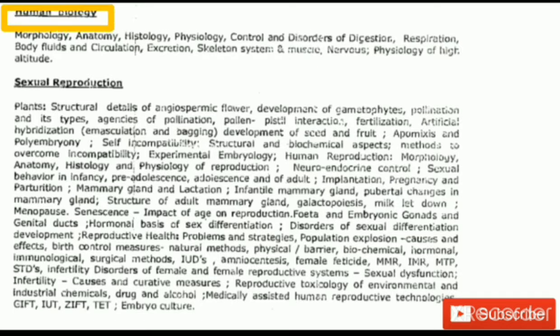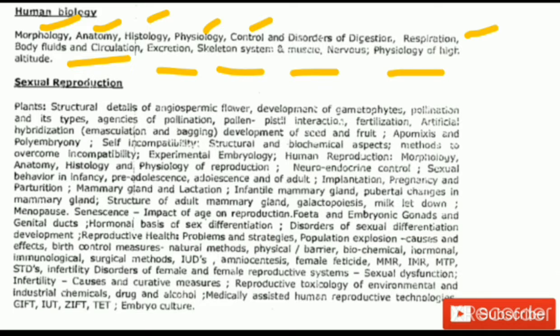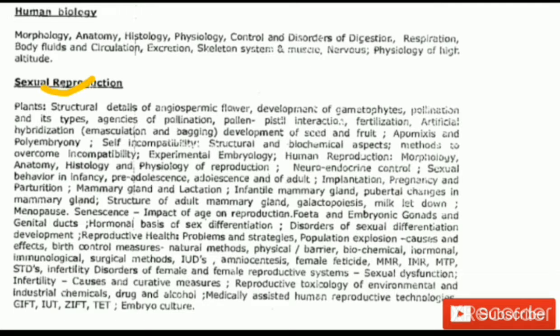The next two units are Human Biology and Sexual Reproduction. In human physiology, you learn about morphology, anatomy, histology, physiology, control, and disorders of digestion, respiration, body fluids and circulation, excretion, skeletal system and muscles, nervous system, and physiology of high altitude. For human sexual reproduction, topics include plant structure, details of the angiosperm flower, and development of gametophytes.